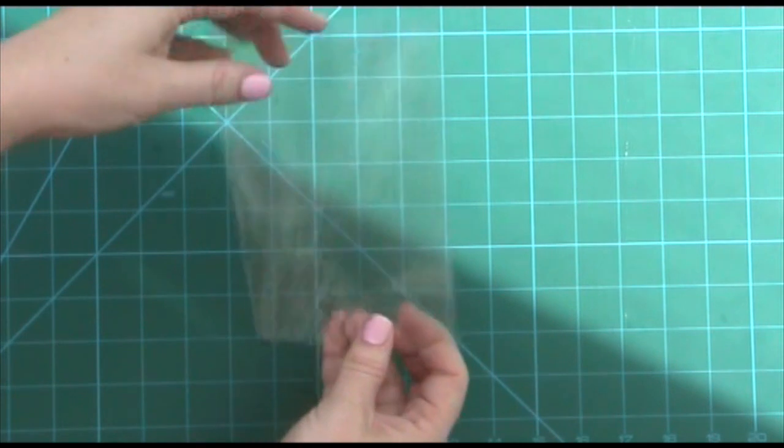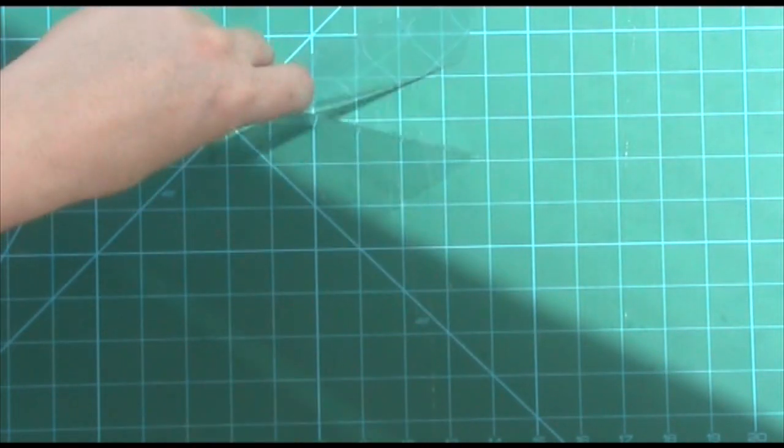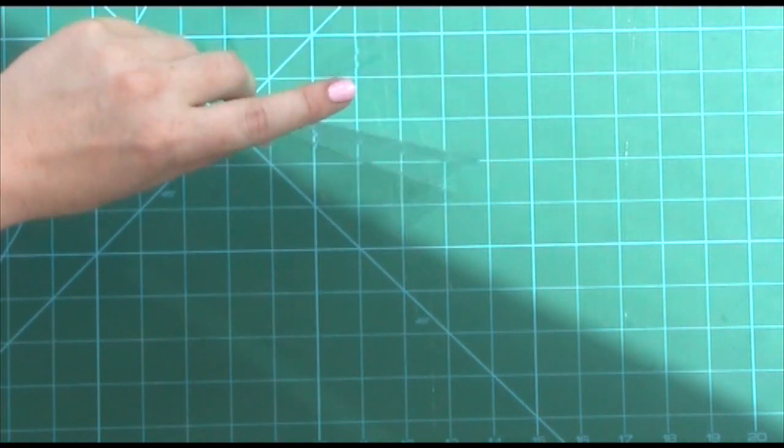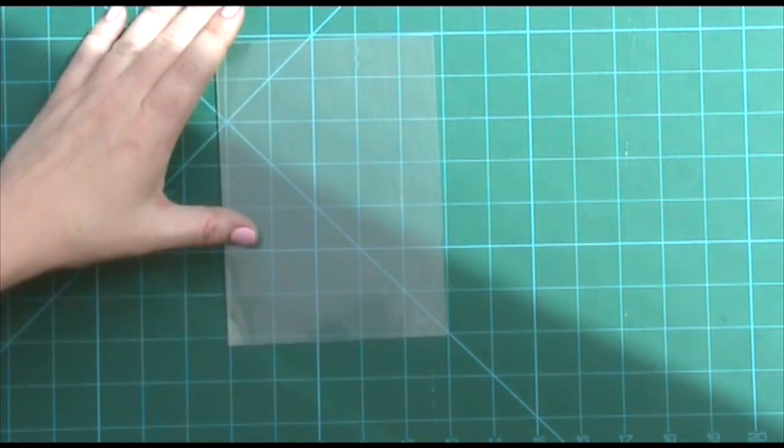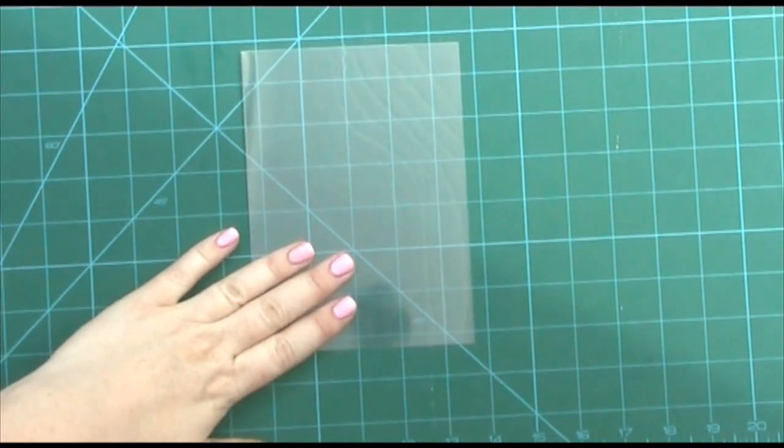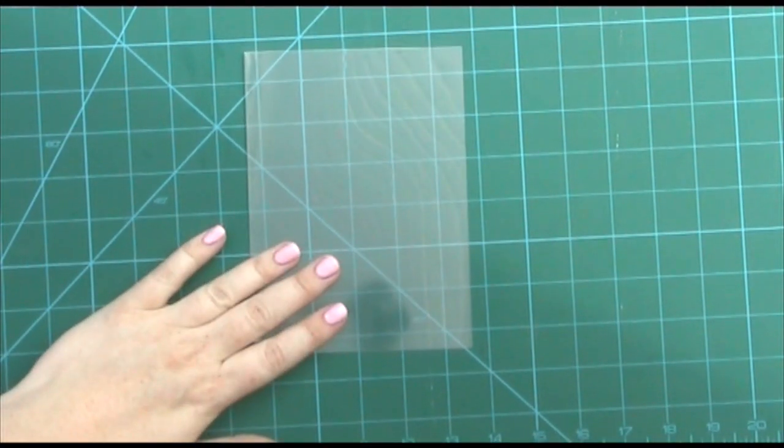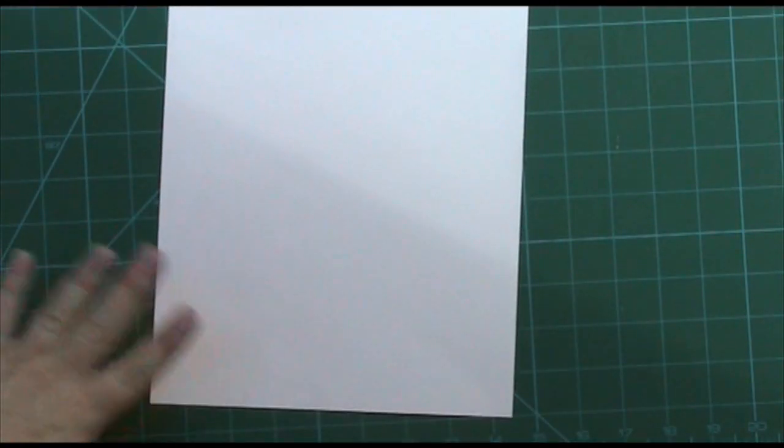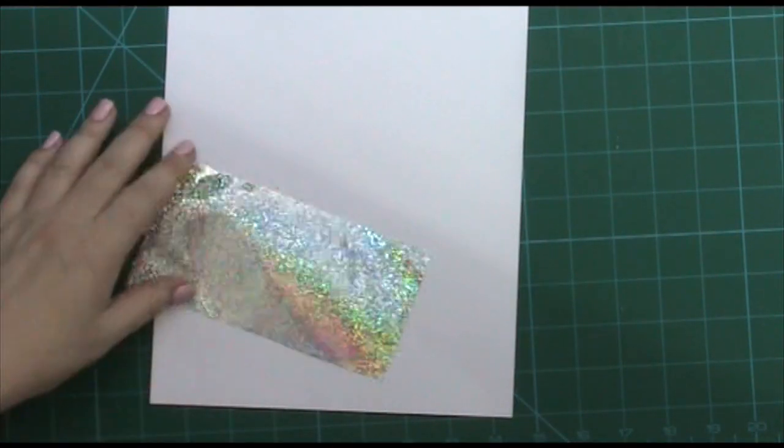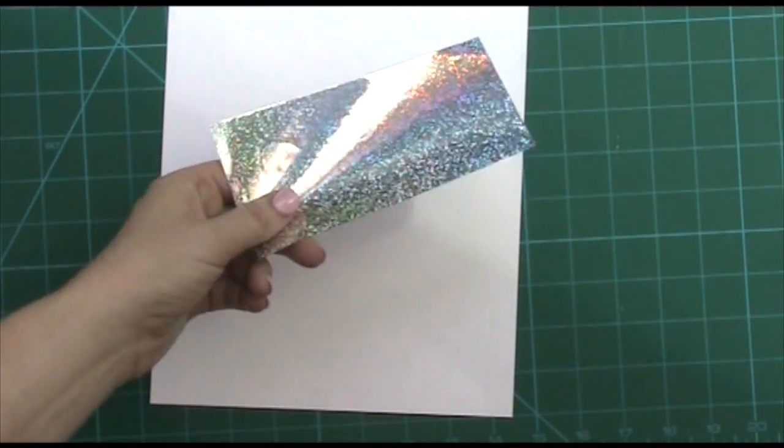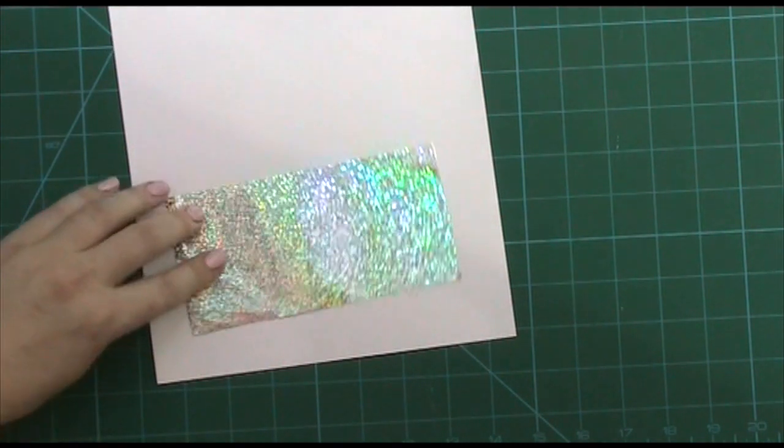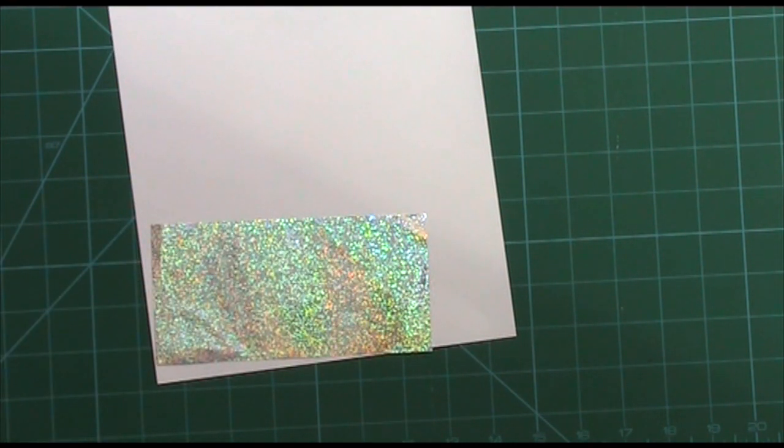So now we have our five by seven card. I'm going to have it as a portrait card and you can see it's quite nice density cardstock. I'm going to pop this to one side and bring in my white piece of paper and also this gorgeous holographic silver. I need to cut both of these to five inches across.